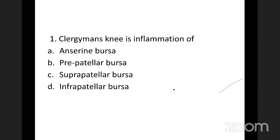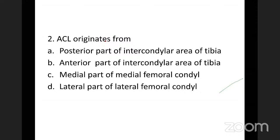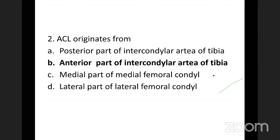MCQ: the anterior cruciate ligament originates from the anterior part of the intercondylar area of the tibia — not the posterior aspect. The correct answer is the anterior part of the intercondylar area.